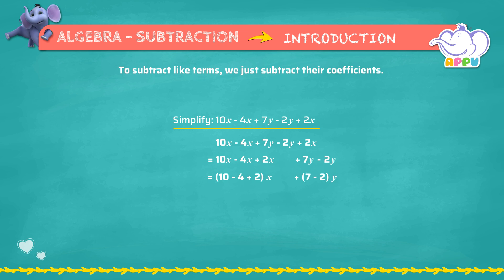Let's first simplify the operations on coefficients of x and then the coefficients of y. We get 6x plus 5y.